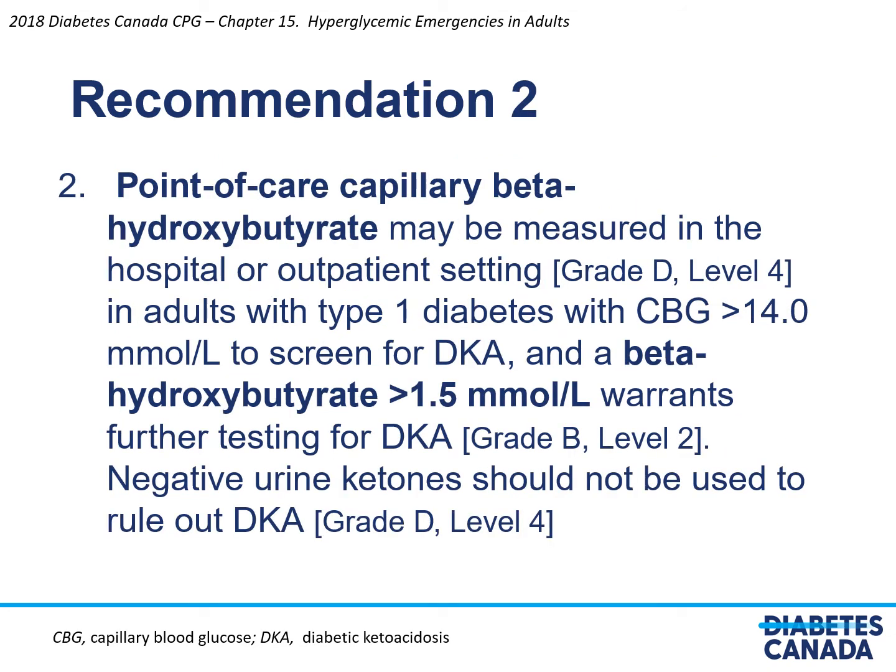Recommendation two: point-of-care capillary beta-hydroxybutyrate may be measured in the hospital or outpatient setting in adults with type 1 diabetes with capillary blood glucose greater than 14 millimoles per liter to screen for DKA. A beta-hydroxybutyrate level greater than 1.5 millimoles per liter warrants further testing for DKA. Negative urine ketones should not be used to rule out DKA.